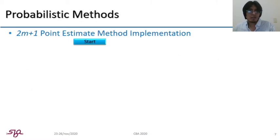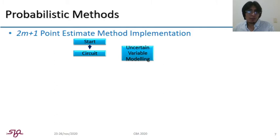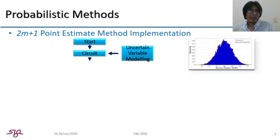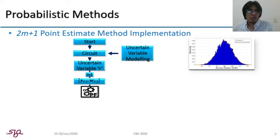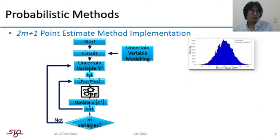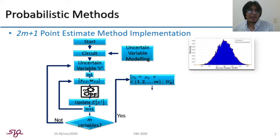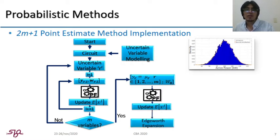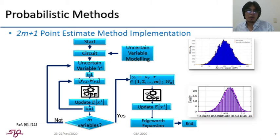A general implementation for a 2m plus 1 point estimate method is applied to the probabilistic power flow. First, initialize variables, define the circuit and uncertain variable modeling. Then, an uncertain variable is selected and concentrations are calculated to perform a deterministic power flow for each location. By doing so, statistical information is updated for a variable of interest and it continues until all m variables are evaluated. Then, an additional deterministic power flow is calculated and the moments are updated. Finally, using this information, the Edgeworth expansion is applied to obtain the probability curves approximation.